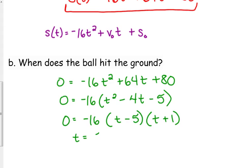So we get 5 seconds and negative 1 second. We can throw out the negative 1 because we can't have negative time.